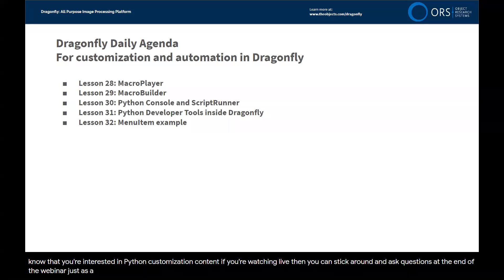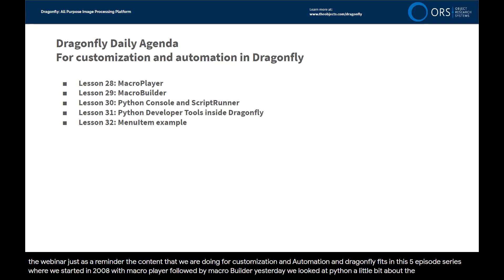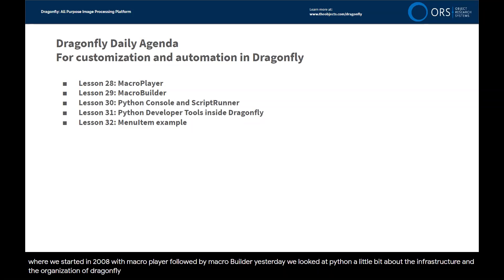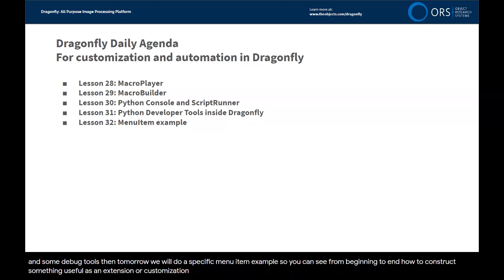As a reminder, the content we are doing for customization and automation in Dragonfly fits in this five-episode series where we started in Episode 28 with Macro Player, followed by Macro Builder. Yesterday we looked at Python Console and ScriptRunner. Today we're going to talk about the infrastructure and organization of Dragonfly code, as well as some developer tools — developer framework and debug tools. Tomorrow we'll do a specific menu item example so you can see from beginning to end how to construct something useful as an extension or customization of Dragonfly.